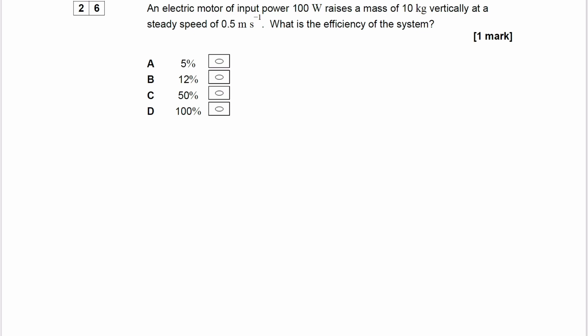So efficiency is equal to useful power output divided by total power input, or you can write that as useful energy output divided by total energy input. So the same thing, it's just one fraction is a fraction of powers and the other fraction is a fraction of energies.